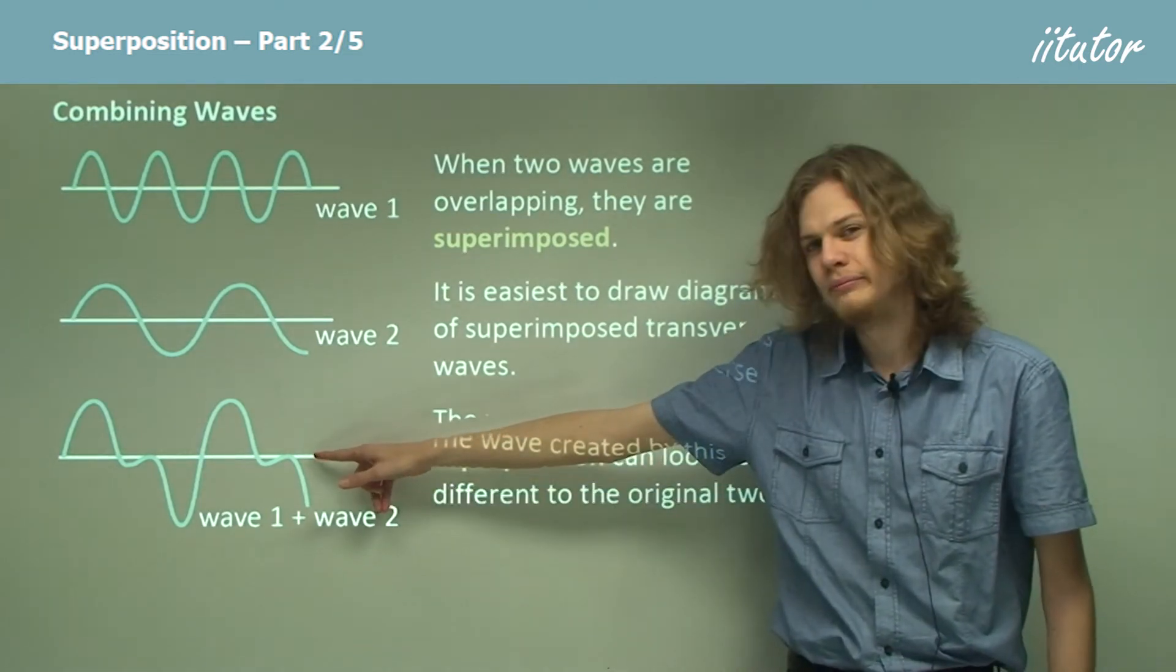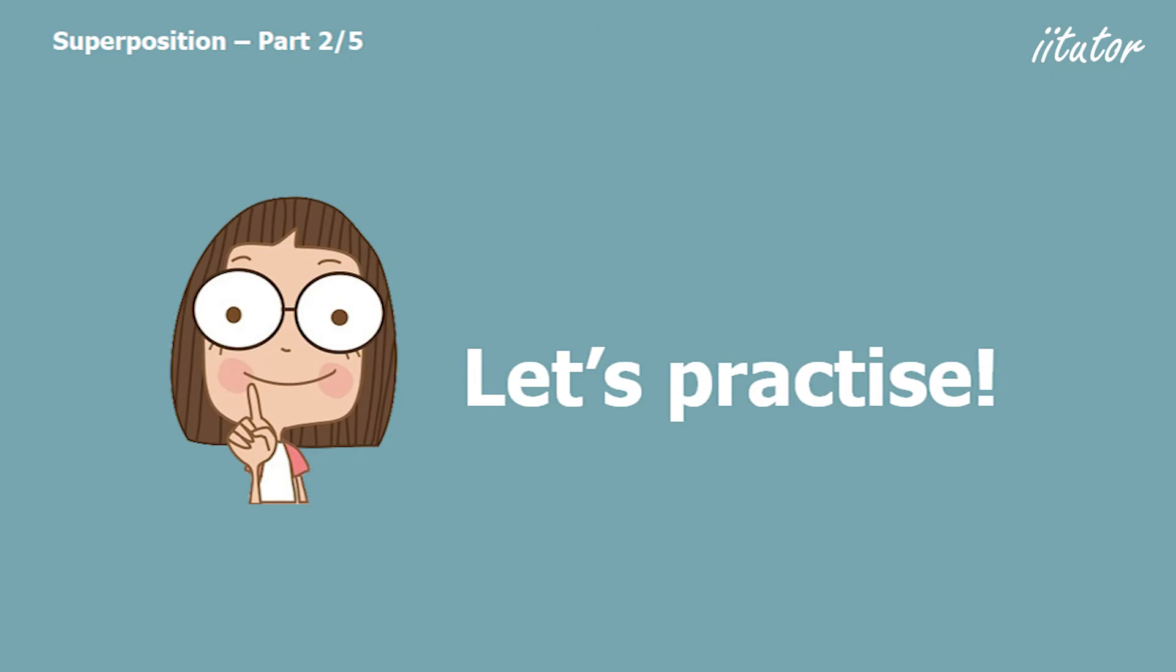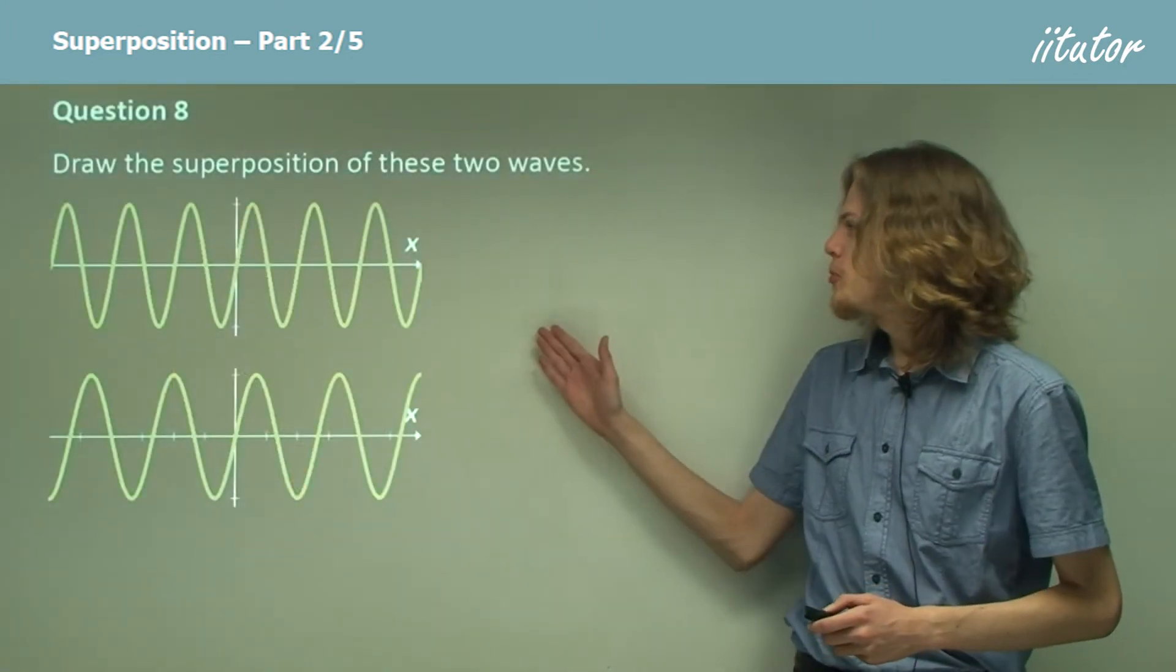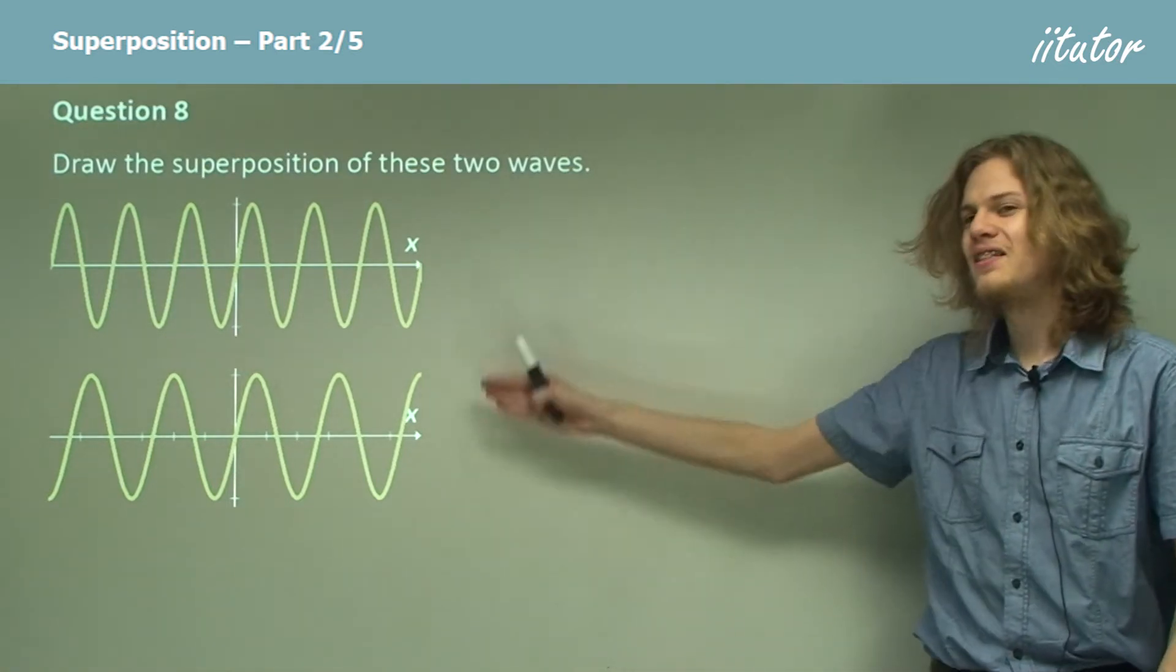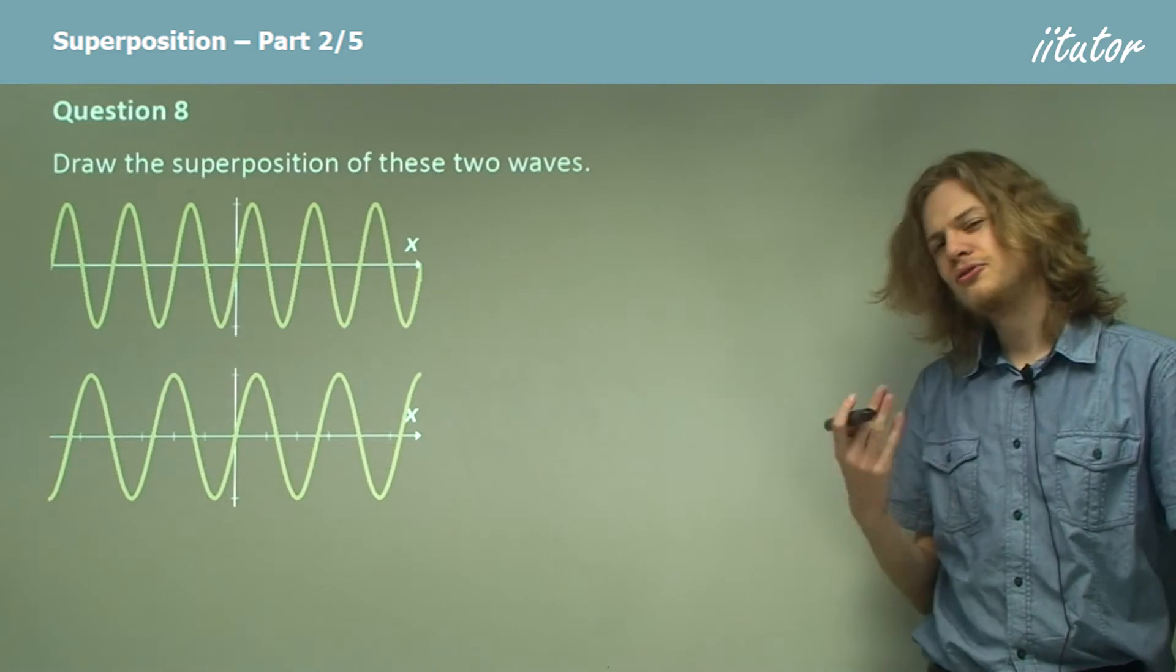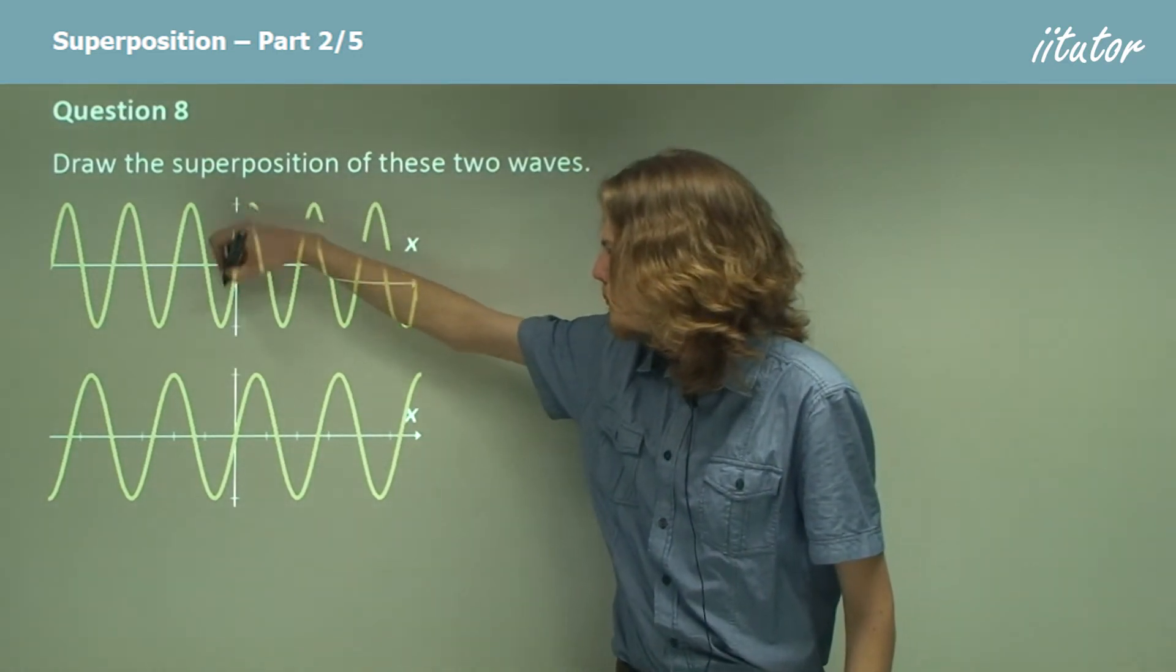Draw the superposition of these two waves. In this case, we have to add together the amplitudes of the different waves. So let's look at this carefully. If we look right at the middle of the